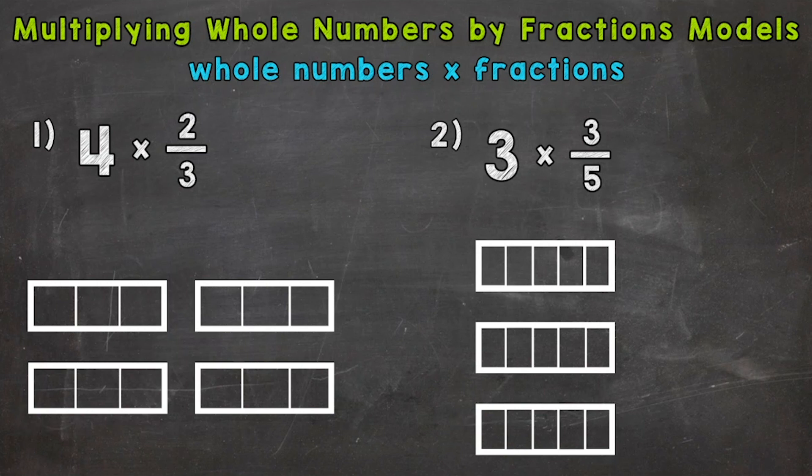So let's jump into number one here where we have four times two-thirds. So four groups of two-thirds. And as you can notice below the problem here, we have four rectangles and they're each cut into thirds. So let's create four groups of two-thirds.